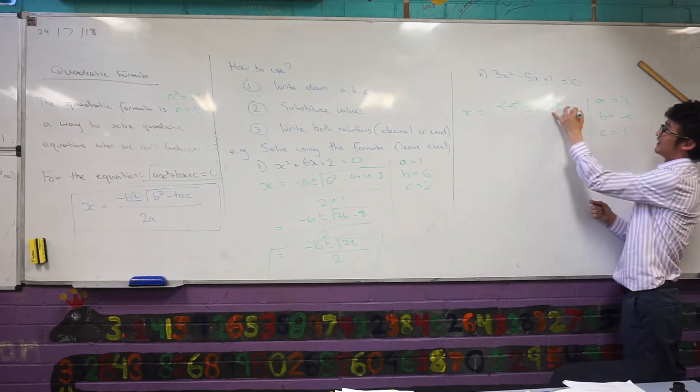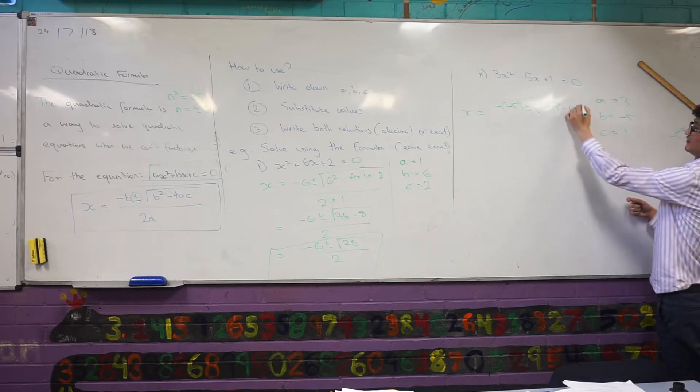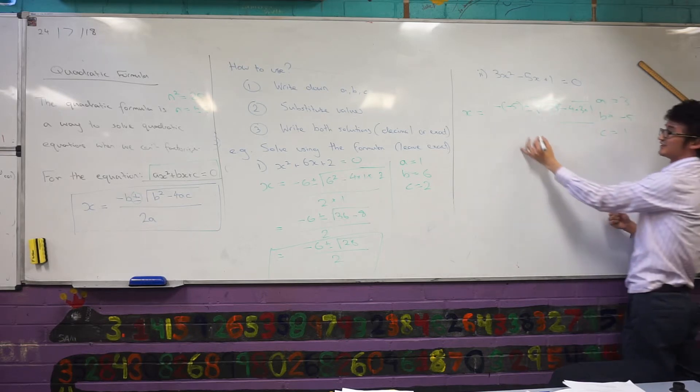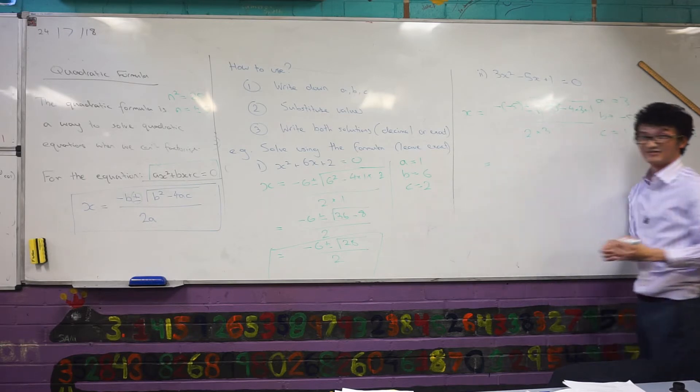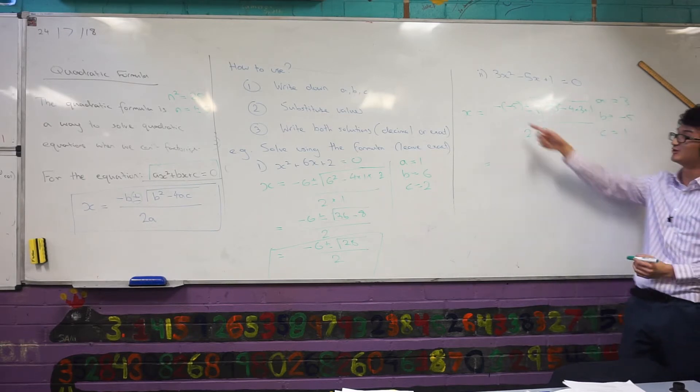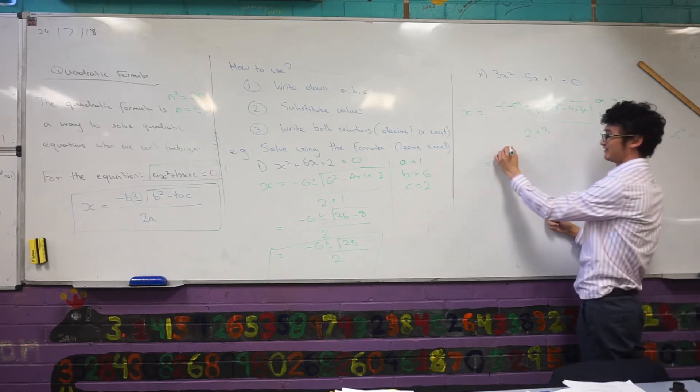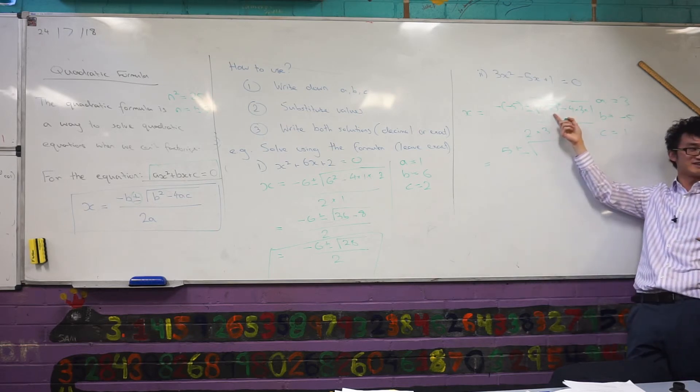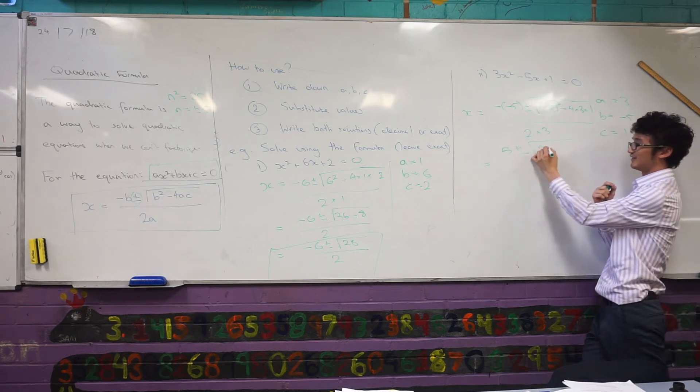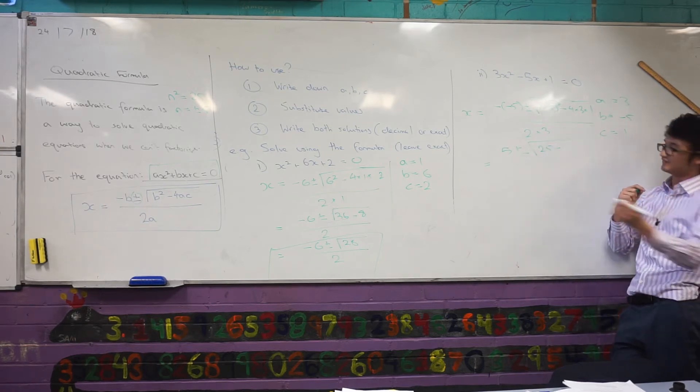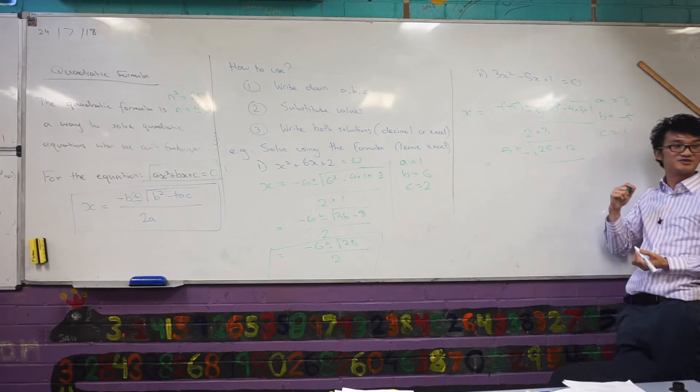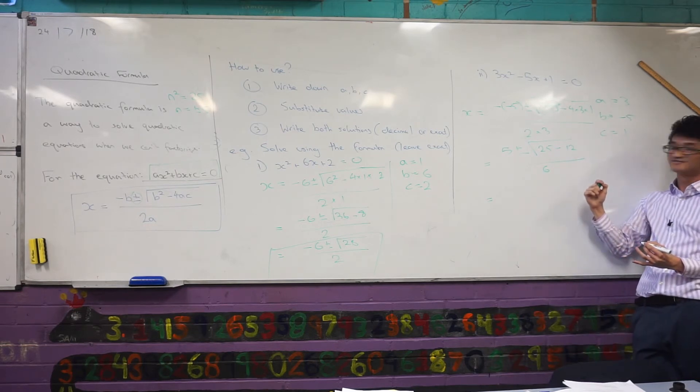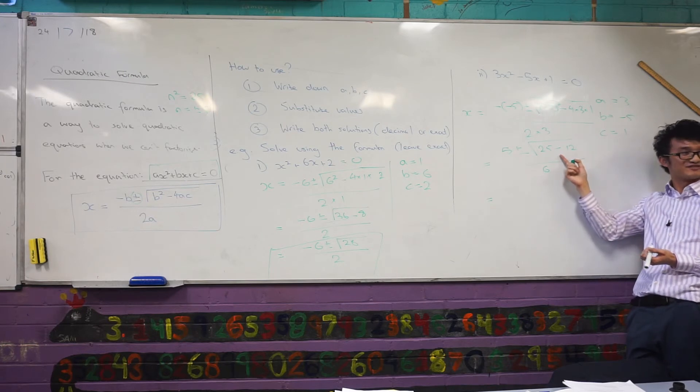Let's keep going. So minus four times, I'm running out of room here. Three times one, all over two a. Now in this case, my a is just three, so that's two times three. I've got a lot of messy stuff here. Let's try and simplify this a bit more. Well, minus minus five, that's just a positive five. Negative five all squared, that's why I say all squared all the time because I don't want you to just put that in your calculator. I know that's just going to be 25. Four times three, that's just 12. All over two times three, that's just six. Anything else I can do here? What else? Sam? Yeah, 25 minus 12.